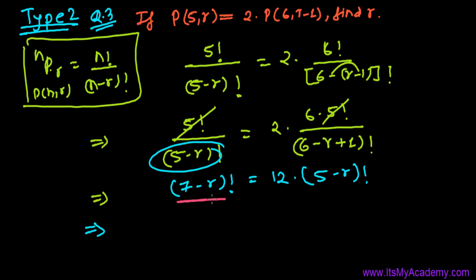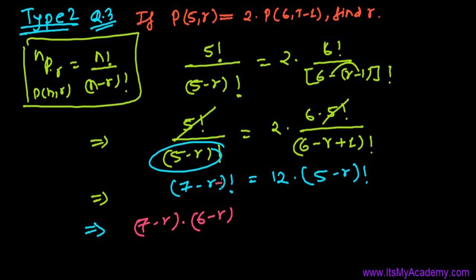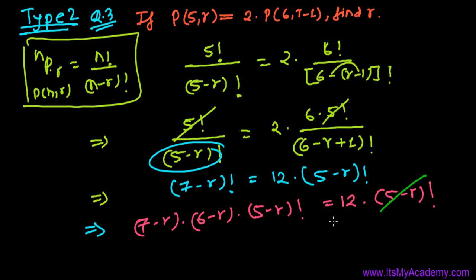Now, (7 minus R) is bigger than (5 minus R), so we can expand (7 minus R) factorial as (7 minus R) times (6 minus R) times (5 minus R) factorial. The right side becomes 12 times (5 minus R) factorial. We can now cancel (5 minus R) factorial from both sides.